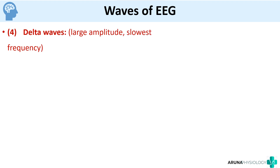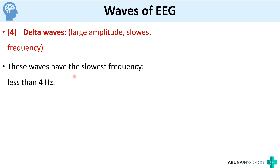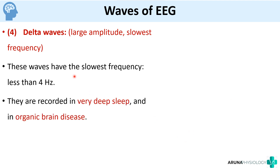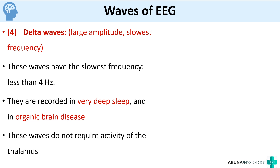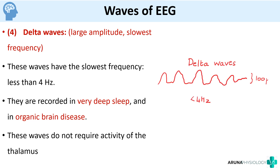Finally, we have got the delta waves, which are large amplitude, slowest frequency waves — here the frequency is less than 4 hertz. They are recorded in very deep sleep and in organic disease. Delta waves do not require the activity of the thalamus. All other waves contain electrical activity generated from the thalamus also, but delta waves are produced even if the thalamus is cut off. You can see that the frequency is very low and the amplitude is again around 100 microvolts.